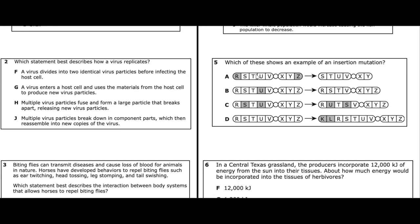Question five: which of these shows an example of an insertion mutation? This is one of the questions you might find on your unit tests. In answer A, we have a sequence R-S-T-U-V and X-Y-Z, and after mutation we have S-T-U-V and X-Y — letters were removed, so that is a deletion. In B, we have R-S-T-U-V and X-Y-Z, then R-S-T-V and X-Y-Z — the U was deleted, so that is also a deletion.